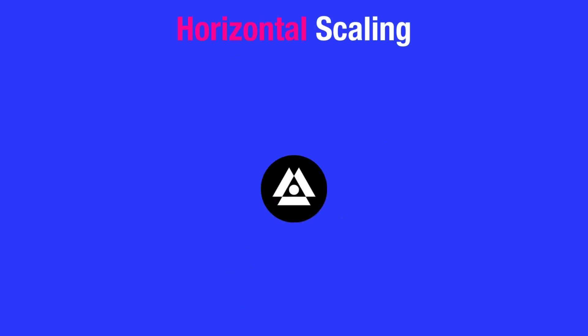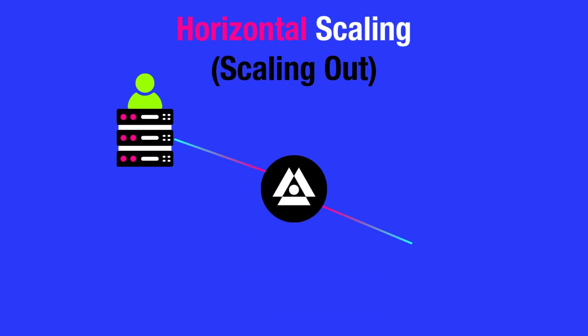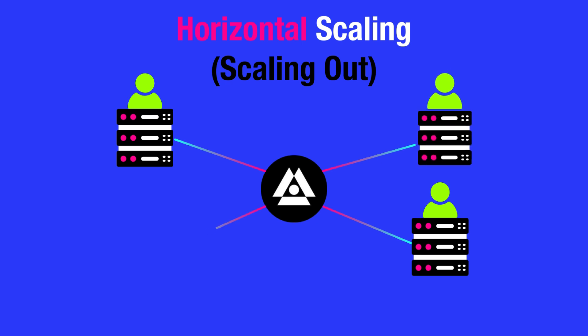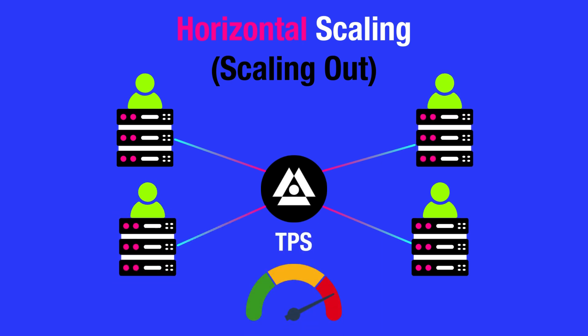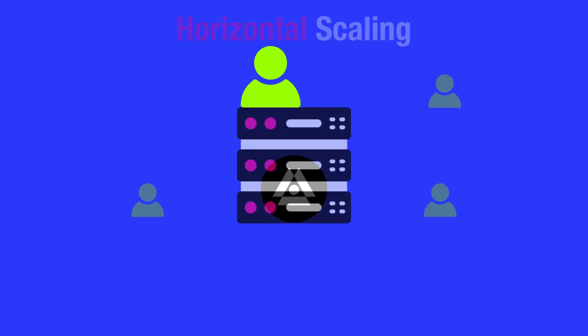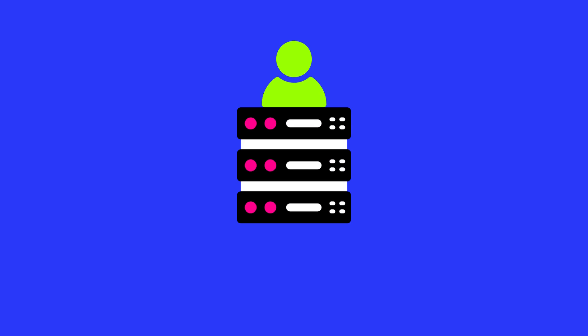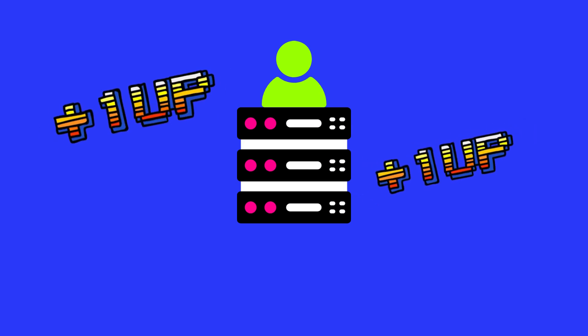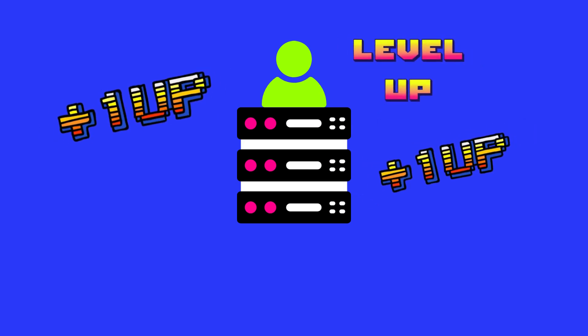Horizontal scaling, also known as scaling out, involves adding more nodes to a network to handle increased load. Unlike the traditional approach in Web3, in which networks increase the hardware capacity of nodes,